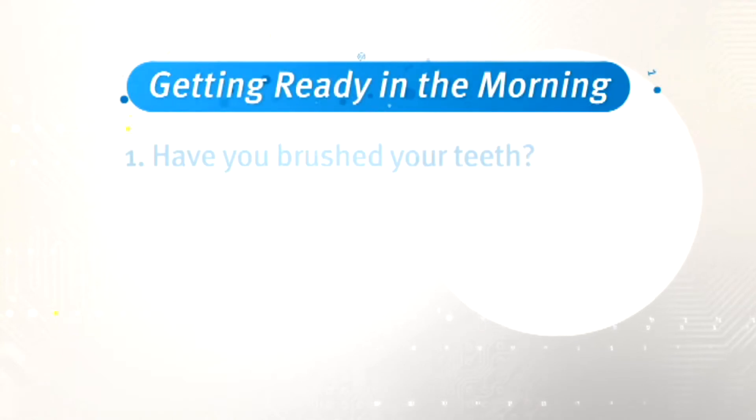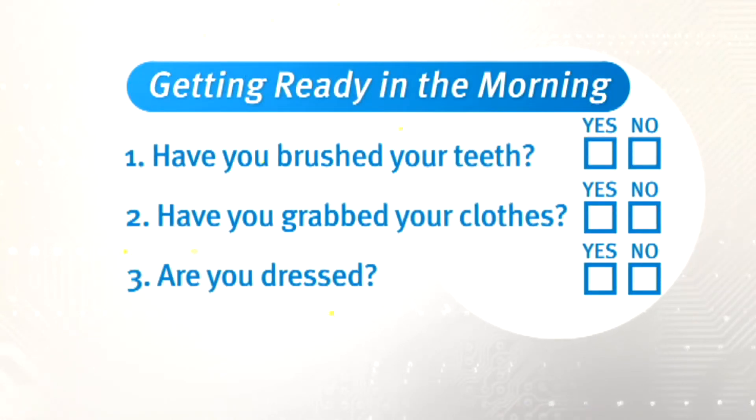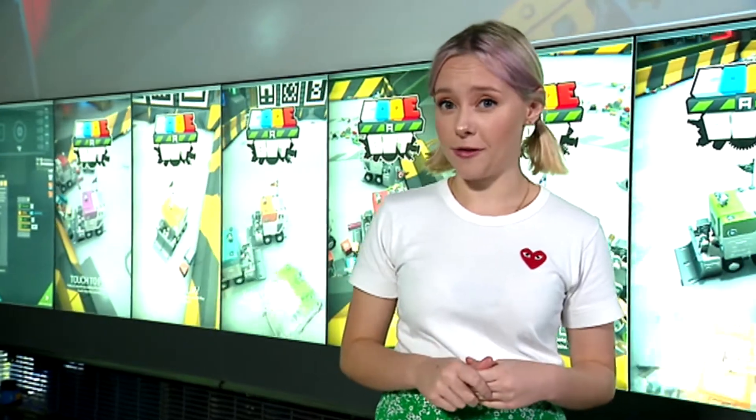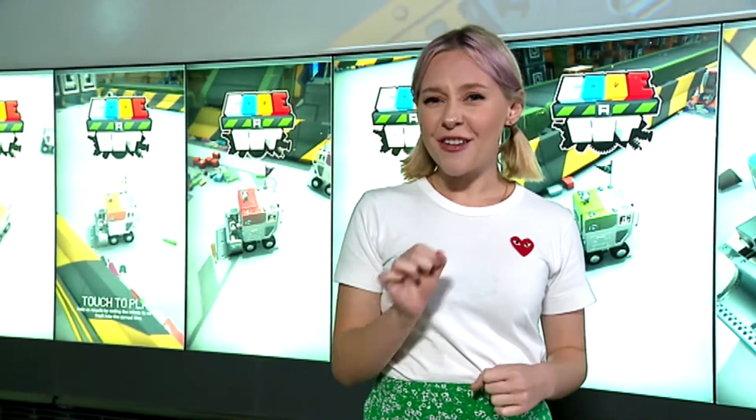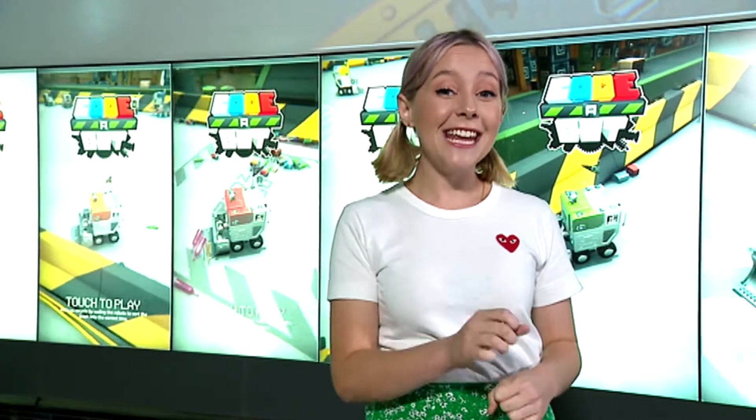This time, we need to make a checklist of all of the things we need to do before we leave the house in the morning. Have you brushed your teeth? Have you grabbed your clothes? Are you dressed? Have you noticed that each step is now a question? But we can only ask yes or no questions. When we make our flow diagram, this will make a lot more sense. For now, let's just note that each step now requires us to make a decision.